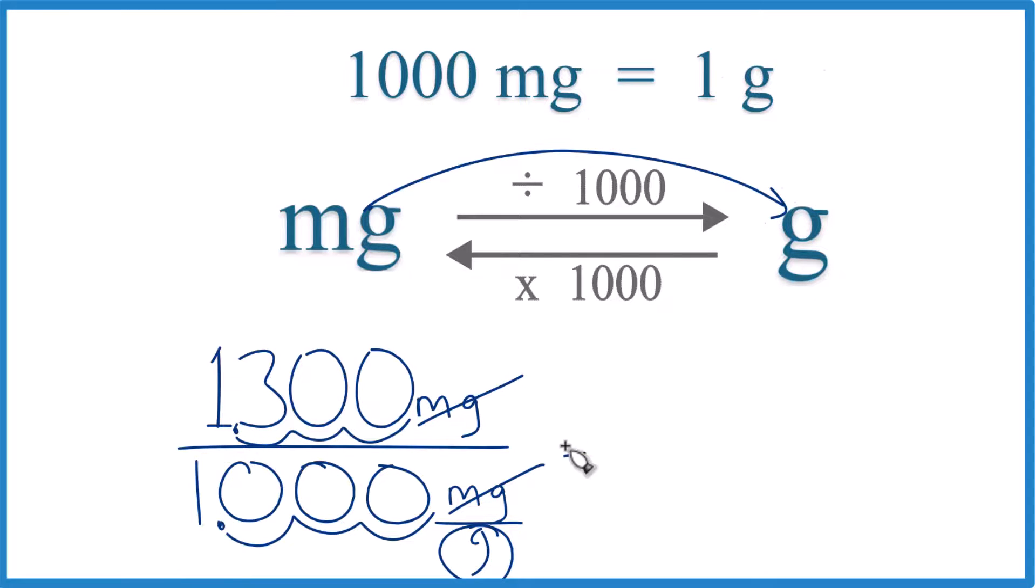And when we convert 1,300 milligrams, we get 1.3 grams. That's it. This is Dr. B, and thanks for watching.